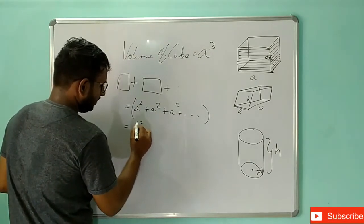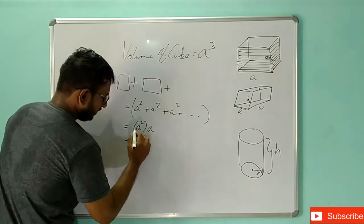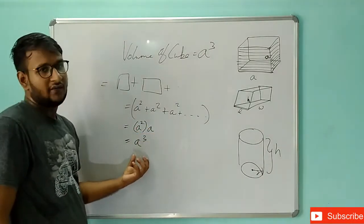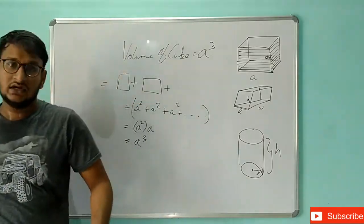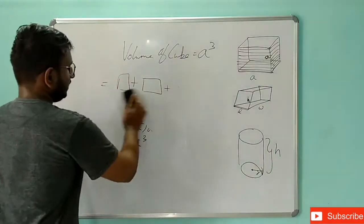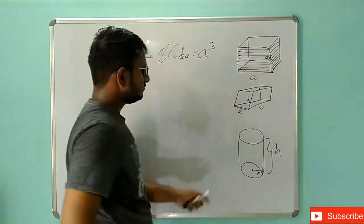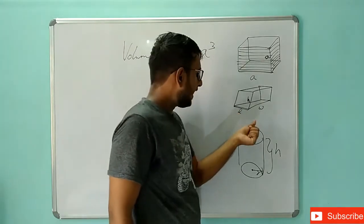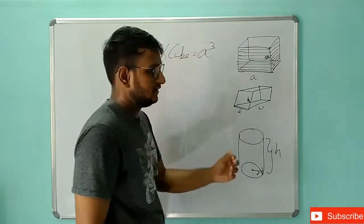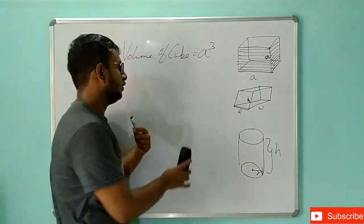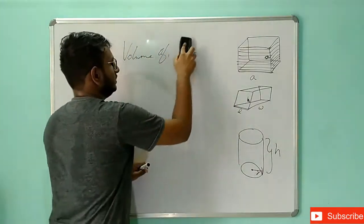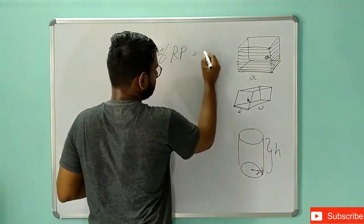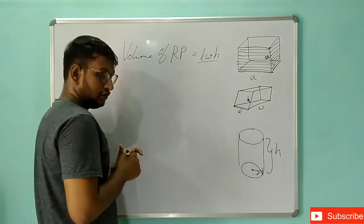So a squared into a, then a into a squared — this is how we derive the formula: a³. This is how we derive the formula. Next we have the rectangular prism. The length is L, height is H, width is W. So we will try it. This is the rectangular prism formula: L into W into H.